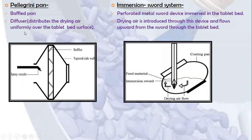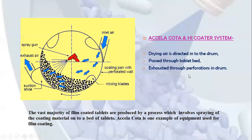The Pellegrini Pan is provided with baffles and a tapered side wall, with a diffuser that distributes drying air uniformly over the tablet bed surface. A separate spray nozzle sprays the coating solution, and the baffles help distribute dry air over the tablet bed surface. In the Immersion Sword System, a perforated metal sword device is immersed in the tablet bed and drying air flows upward from the sword through the tablet bed.